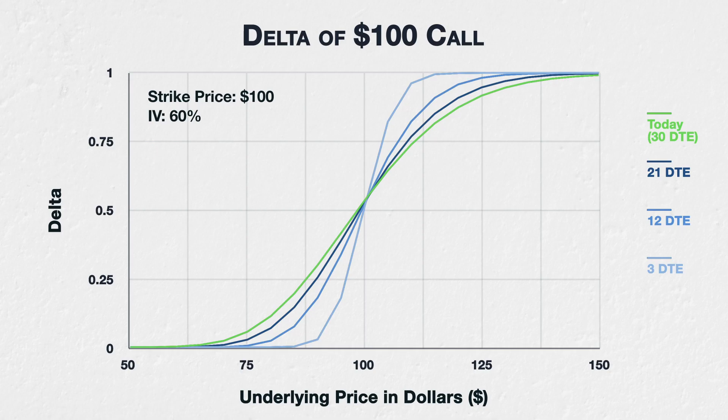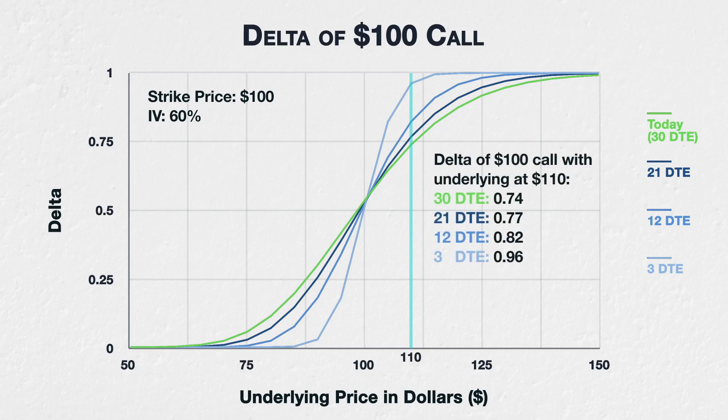The days to expiry can be seen to have a similar effect on delta as implied volatility was shown to have previously. The higher the days to expiry — i.e., the longer there is until expiration — the further in the money the call option has to be to have a delta approaching 1, and the further out of the money the call option has to be to have a delta approaching 0. If we look at the delta of the $100 call with the underlying price sitting at $110, we get the following deltas for each DTE.